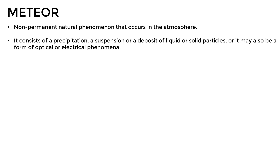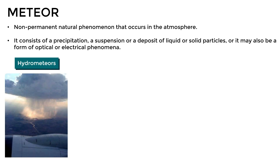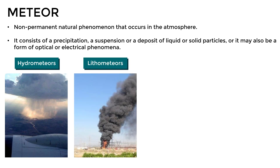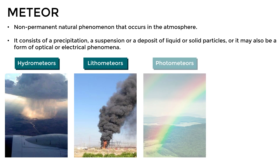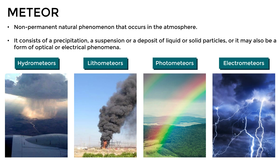According to their nature, meteors can be subdivided into different classes. There are hydrometeors, which are water-related phenomena in a liquid or solid state, such as clouds, rain, or fog. There are also lithometeors, related to phenomena formed by particles other than water, such as smoke, dust, or sand. Then we have photometeors, related to optical effects in the atmosphere, such as a rainbow. And finally, electrometeors, related to electrical phenomena such as lightning or aurora borealis.